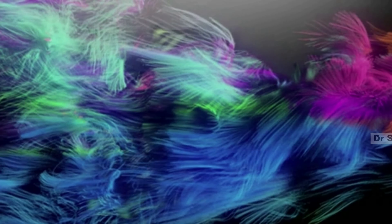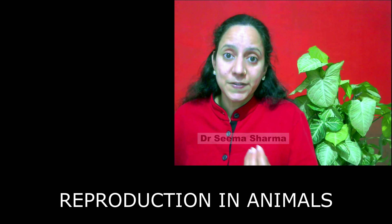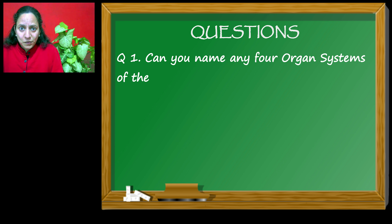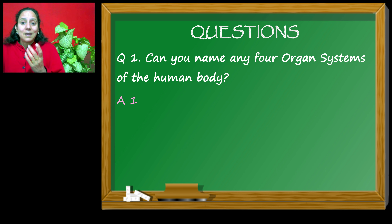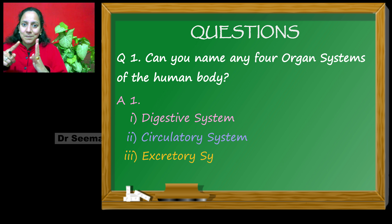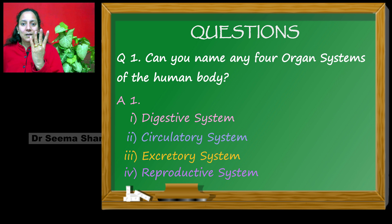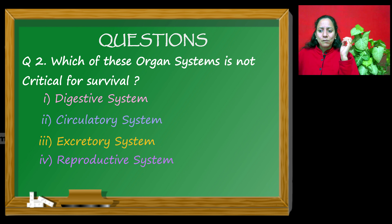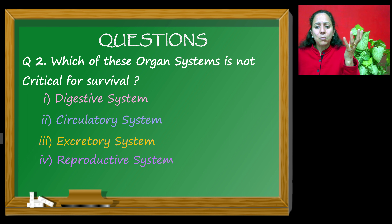Let's go for a quick flashback to connect with this topic, Reproduction in Animals, using certain questions. My first question is: can you name any four organ systems of the human body? The answer is digestive system, circulatory system, excretory system, and reproductive system. These are important organ systems of the human body. Now, out of these four, which organ system is not very important for the organism to stay alive?